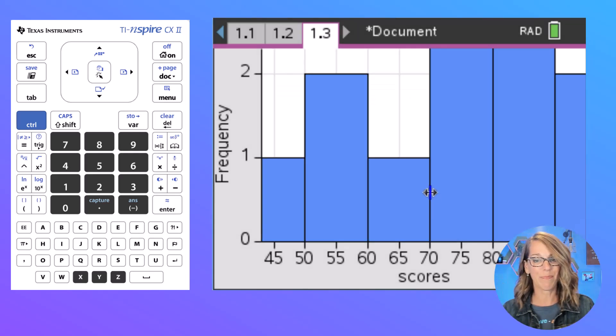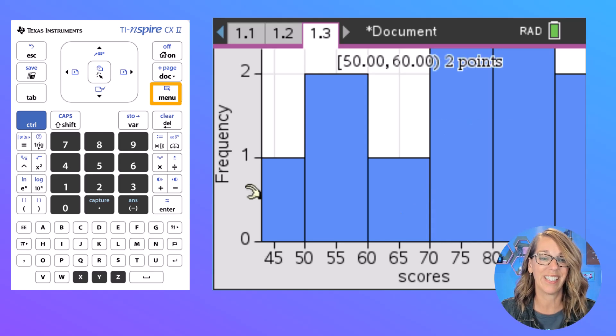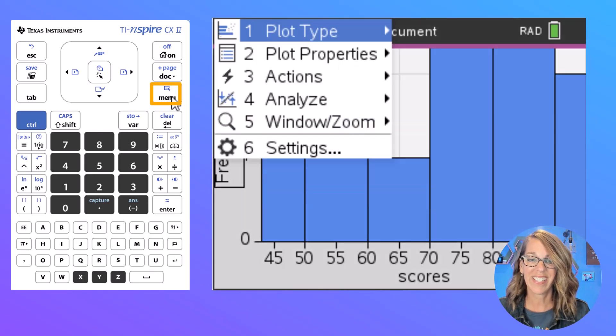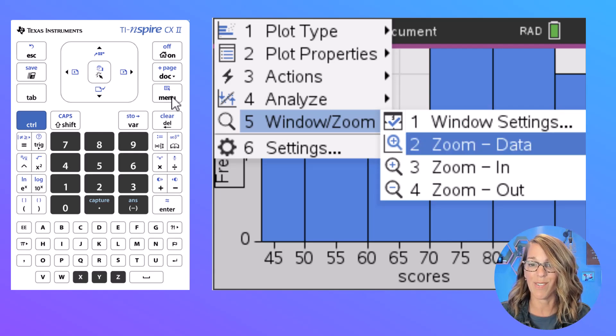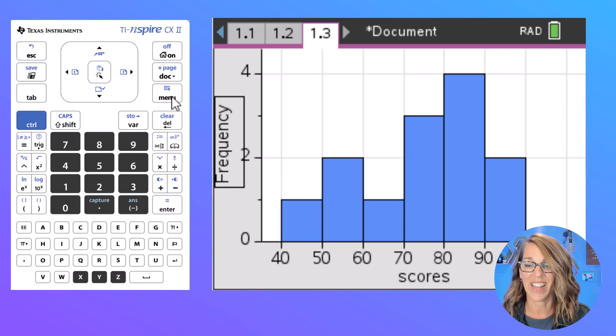Okay, so it does a pretty good job but I need to adjust that scale. Okay, so again menu. So I'm going to click menu and then this time I'm going to change my window and zoom. So number 5 for window and zoom, and I really want zoom data so it fits the data that I'm using. Number 2 there and then enter, and I get a really nice looking graph.